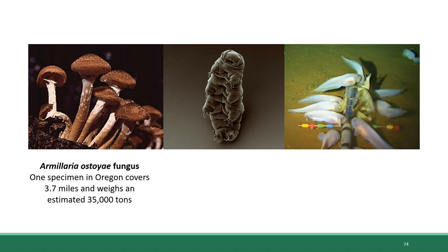Here on this slide are a few examples to give you a sense of that range. Armillaria osteoae is a type of fungus, a mushroom, that may appear small to us but is actually enormous because most of the fungus grows underground. There's a specimen in Oregon that is debated to be the largest living organism on the planet.